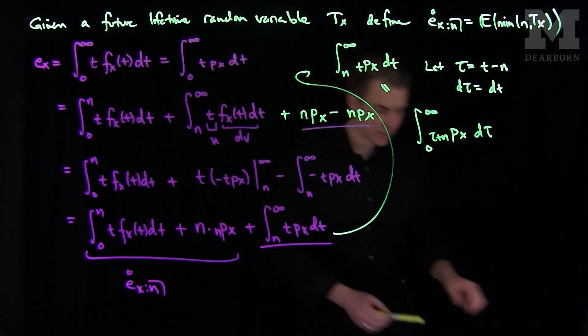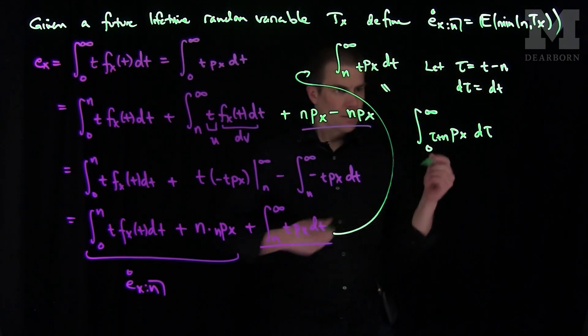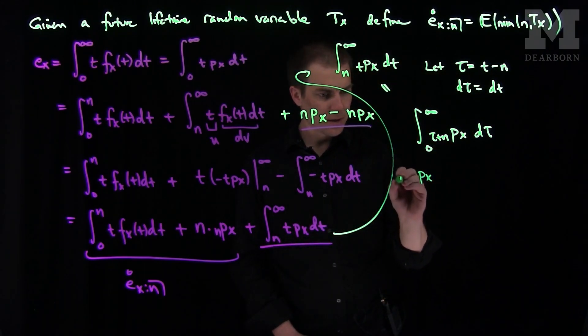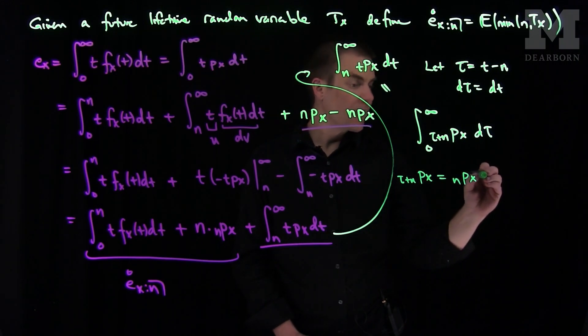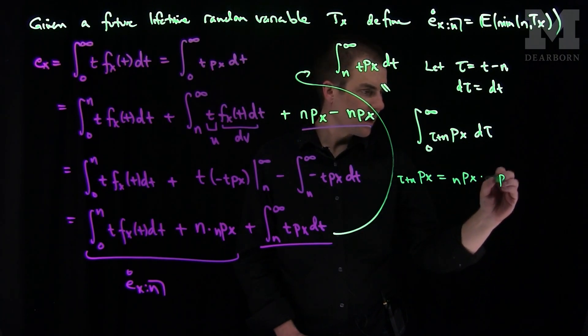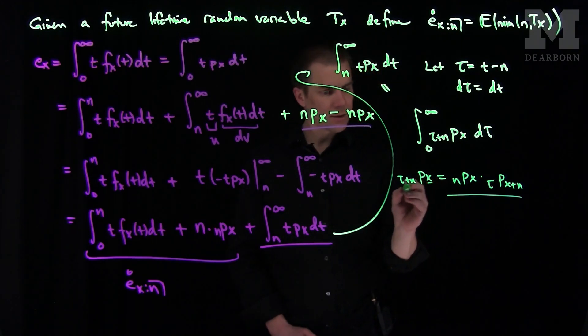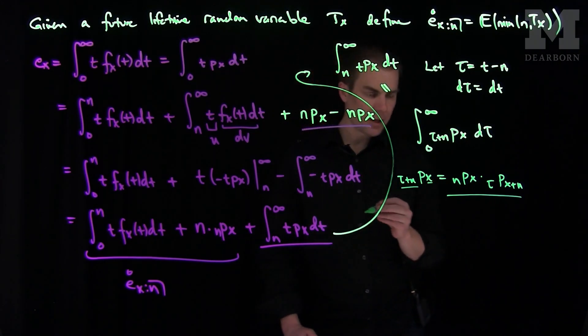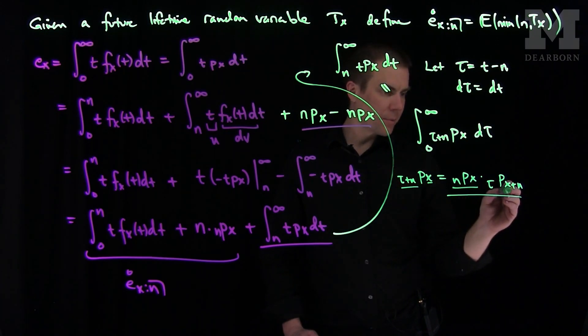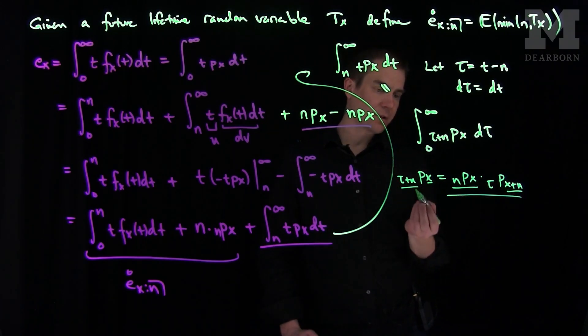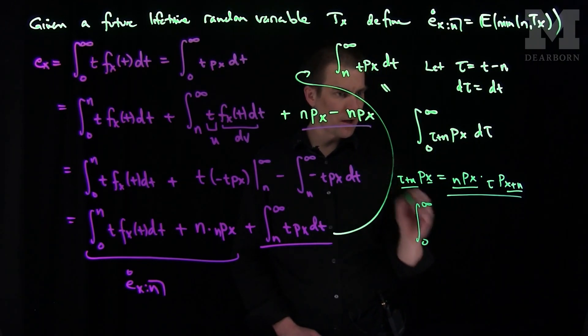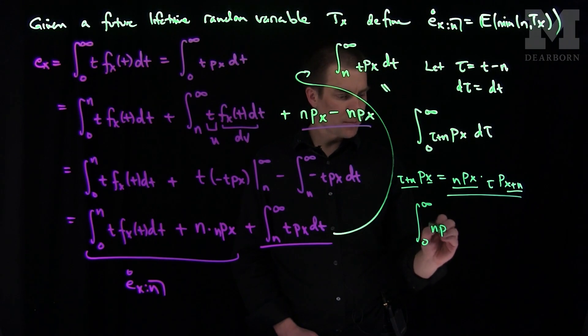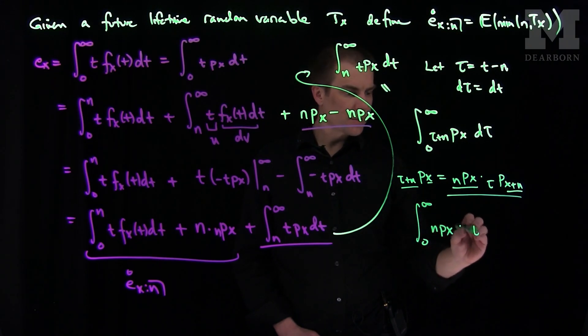And now we'll use the following fact. We'll use the fact that px tau plus n is pxn times px plus n tau. The probability that a person aged x survives tau plus n years is the probability that they survive n years times the probability that a person aged x plus n survives an additional tau years. And so this integral, I'll be able to write this as the integral from 0 to infinity of n px and then times tau px plus n dtau.